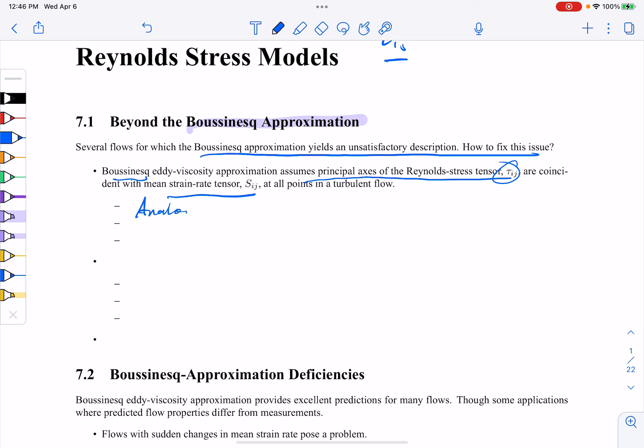This is an analog of Stokes hypothesis for laminar flow, and obviously we are interested in turbulent flow, and it would imply the Boussinesq approximation that the coefficients of proportionality between tau ij and Sij is eddie viscosity.